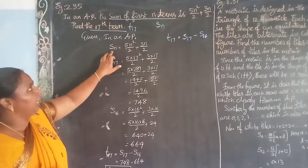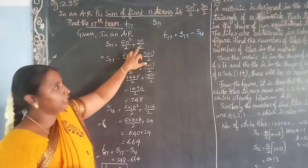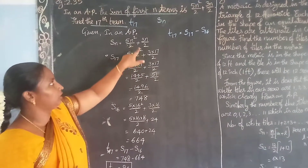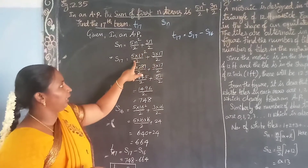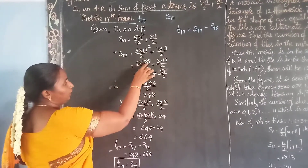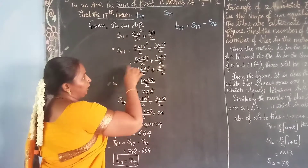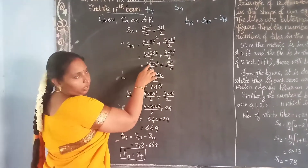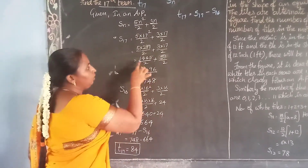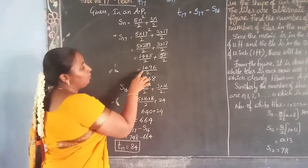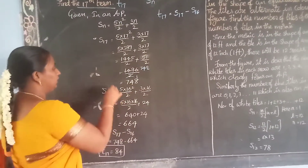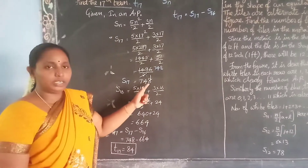Given Sn = 5n²/2 + 3n/2, we are going to find S17. S17 = 5×17²/2 + 3×17/2. 17² is 289, so 5×289/2 + 3×17/2 = 1445/2 + 51/2. The denominators are the same, so we add the numerators to get 1496/2 = 748. So S17 = 748.